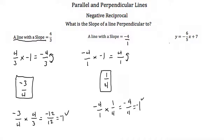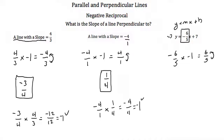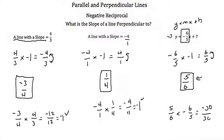Let's look at our third example. Here we have an equation written in slope-intercept form, so we know the slope of this line is negative 6 fifths. To find the slope of a line perpendicular to it, we take the negative reciprocal: negative 6 fifths times negative 1 is 6 fifths, then swapping numerator and denominator gives us 5 sixths. So the slope of a line perpendicular to y is equal to negative 6 fifths x plus 7 is 5 sixths. Checking: 5 sixths times negative 6 fifths is negative 30 over 30, which is negative 1.